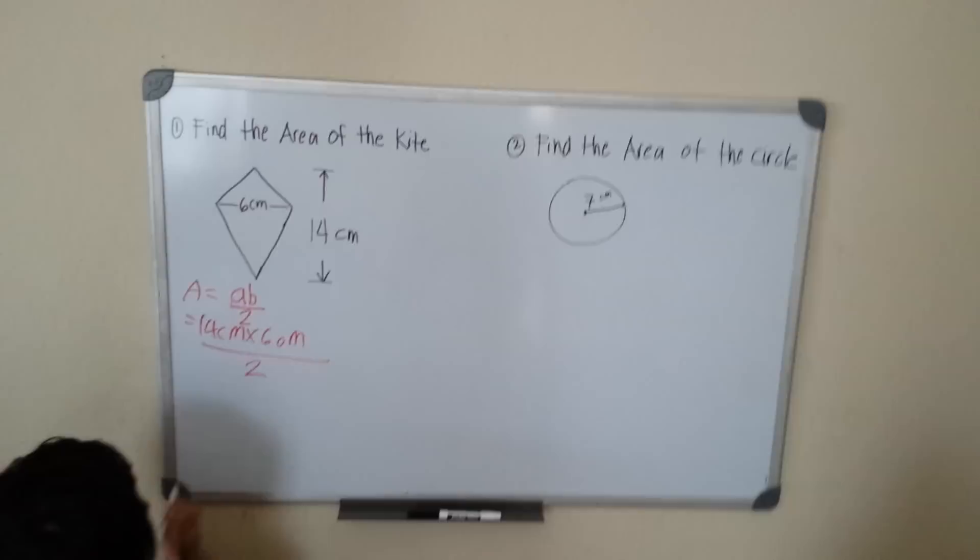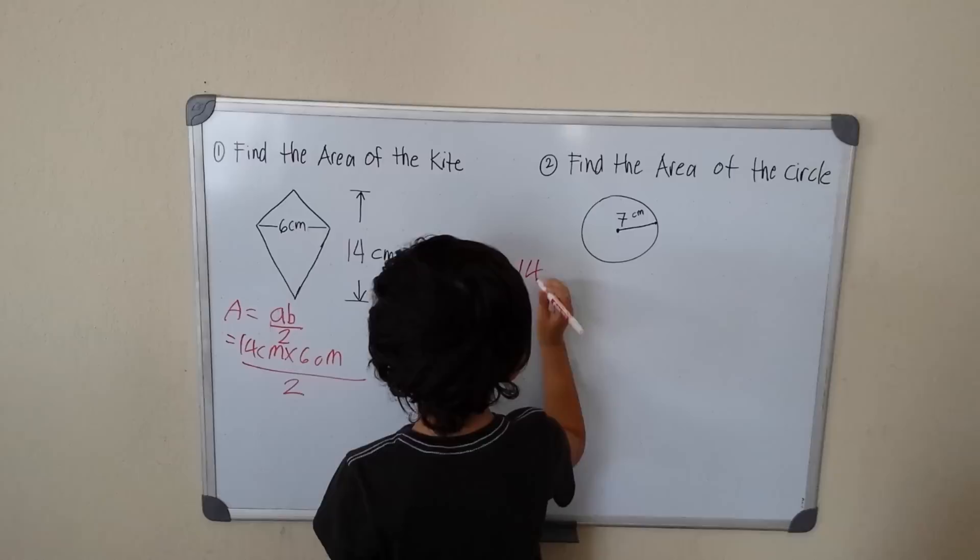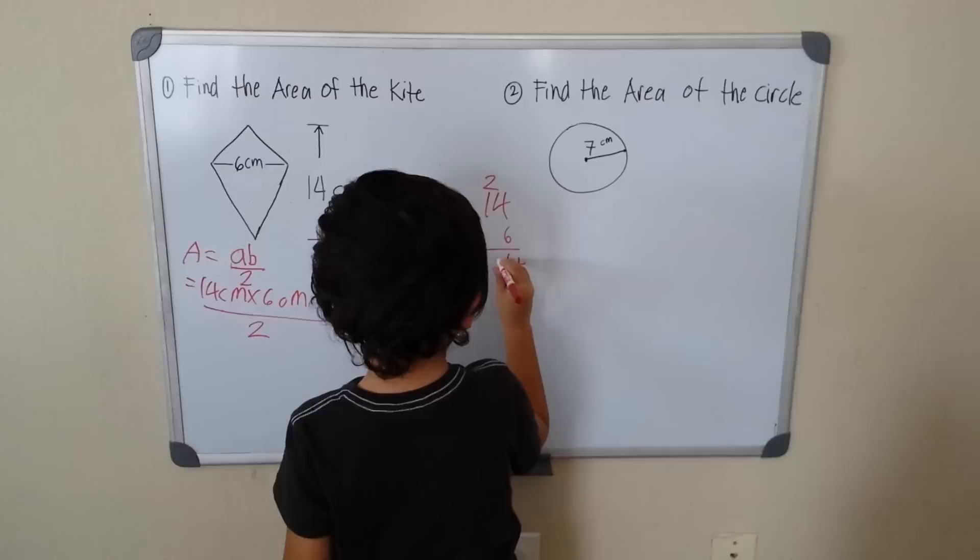Okay, okay. So 14 times 6, 14 times 6 equals, 6 times 4 is 24, divided by 2, 6 times 1 is 6, 6 times 1 is 6, plus 2 is 84.